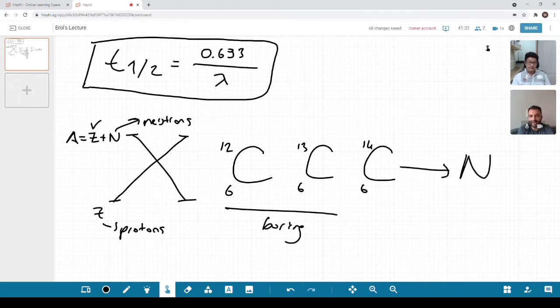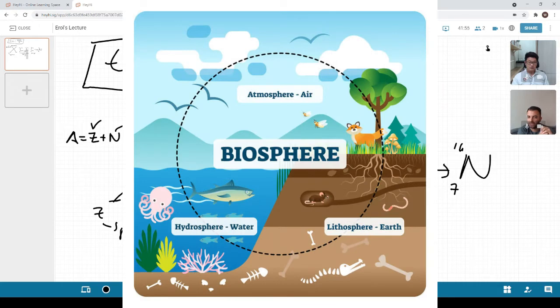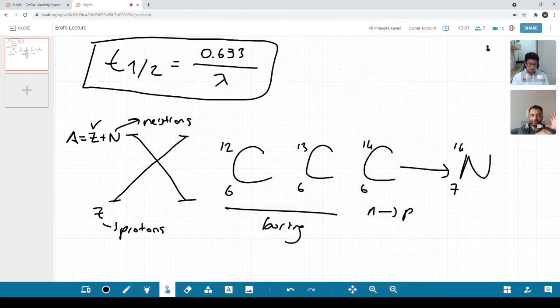So this carbon turns into nitrogen and it also, when it does this, it changes one of its neutrons to a proton. A neutron changes into a proton. The reason I'm telling all this is because this is very important. Why? We are all made of carbon. In our atmosphere, there is a place called biosphere. Why is it called biosphere? Because bio comes from biology. There is life. There is everything in there.